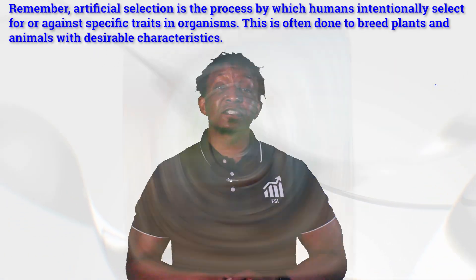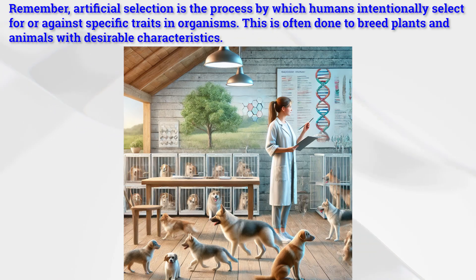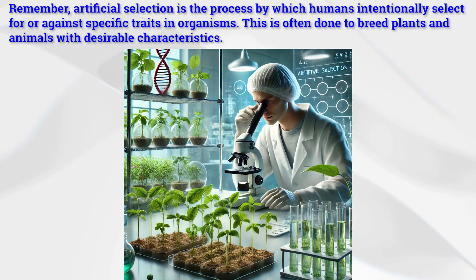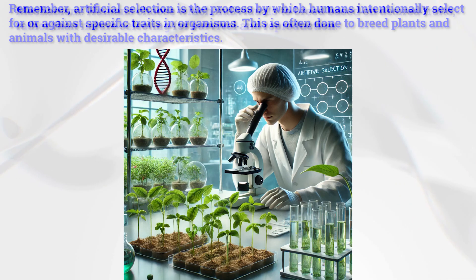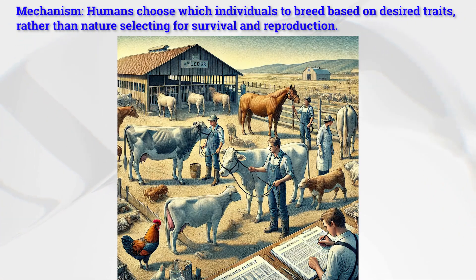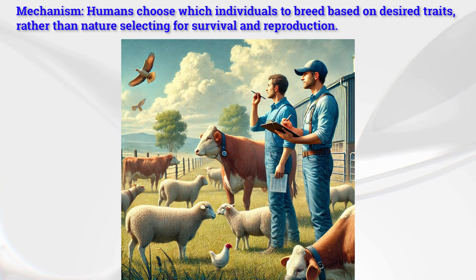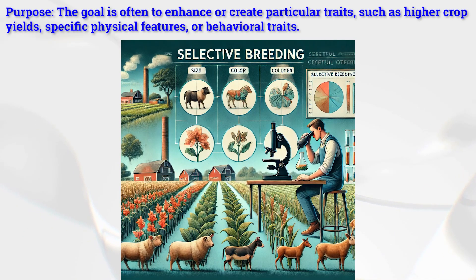Now the key points of artificial selection. Remember, artificial selection is the process by which humans intentionally select for or against specific traits in organisms. This is often done to breed plants and animals with desirable characteristics. The mechanism: humans choose which individuals to breed based on desirable traits, rather than natural selection for survival and reproduction.